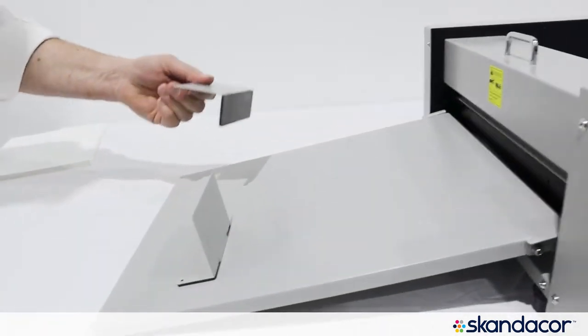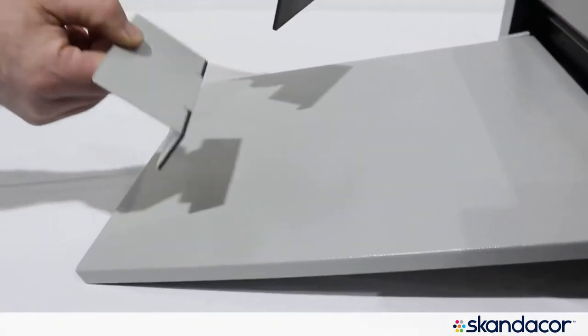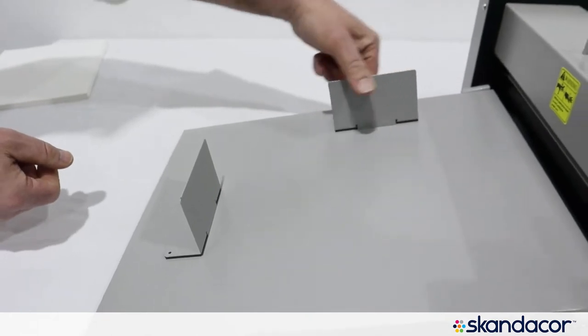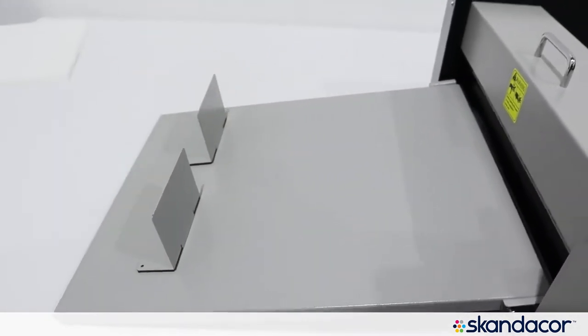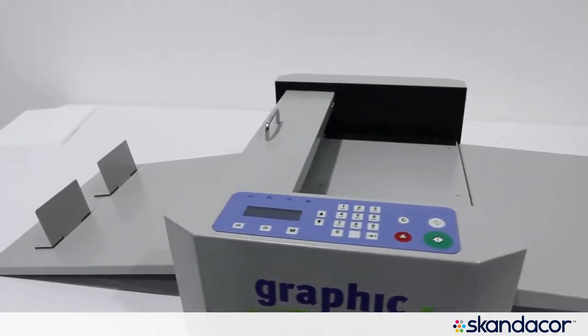You also have two magnetic guides that you can put on the tray in whatever configuration you want for acting as a backstop for the sheets coming out of the machine.